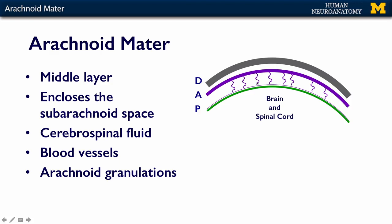It has these little trabeculae, and this is to represent the space that's created and filled when you're alive with cerebrospinal fluid. So the arachnoid encloses the subarachnoid space, it provides a pathway and support for the incoming arteries and outgoing veins, and it has a specialization called the arachnoid granulations that we'll talk about towards the end.